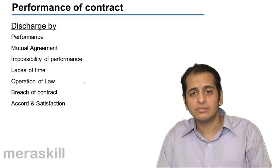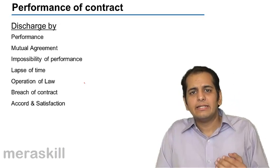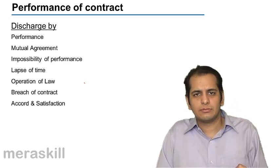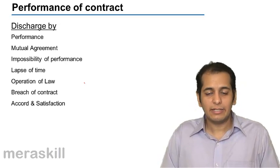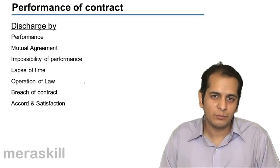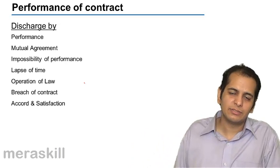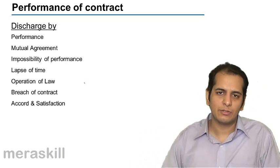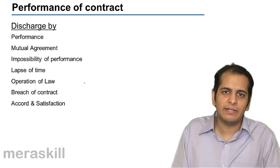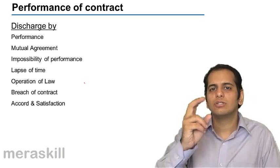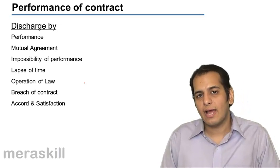The final method is accord and satisfaction. Accord and satisfaction is when the promisee accepts a smaller performance from the promisor. For example, if the promisor was supposed to give the promisee 20,000 rupees, but the promisee accepts and agrees for a payment of 15,000 or 12,000 only — he is satisfied and gives his accord to a smaller performance. This is called discharge by accord and satisfaction.